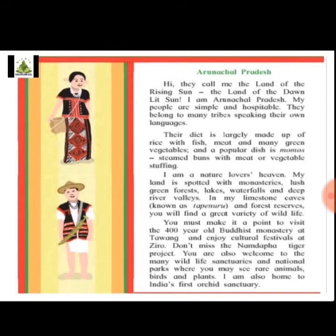'Hi, they call me the land of the rising sun.' Arunachal Pradesh is called the land of the rising sun because when the sun rises there, it shows a very beautiful climate. It is also called 'the land of the dawn-lit sun.' The people are simple and hospitable — meaning friendly and generous — belonging to many tribes speaking their own languages. Their diet is largely made up of rice with fish, meat, and many green vegetables.